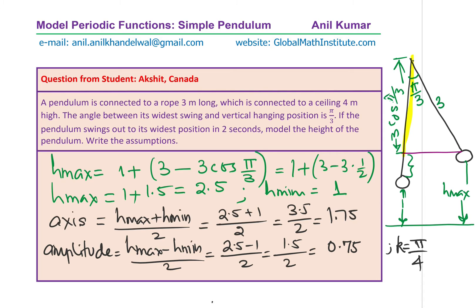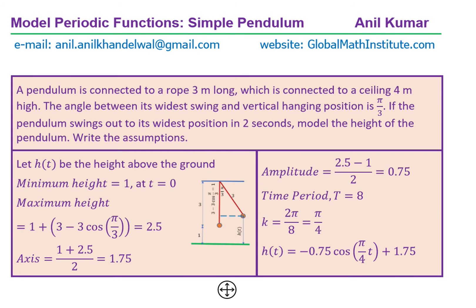We can now write the function as H of T equals to the amplitude, which is 0.75. Negative sign, because we are starting from the bottom. Cosine of K is pi by 4 T plus the axis, which is somewhere here in between, is 1.75. Is that clear to you? That is how we can get the cosine function to model the given situation. I hope this is absolutely clear.